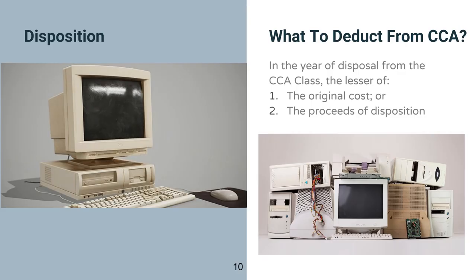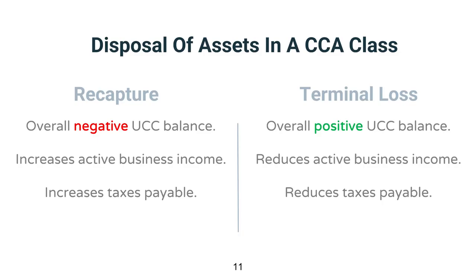When talking about dispositions, what you deduct from CCA is the lesser of the original cost of the asset or the proceeds of disposition. When you've disposed of all assets in one asset class, you're normally left with either a positive or negative balance. A negative balance is called a recapture, which is added to your active business income. A positive balance gives you a terminal loss, which reduces your active business income — and these changes will respectively increase or decrease your taxes payable.